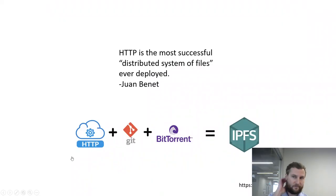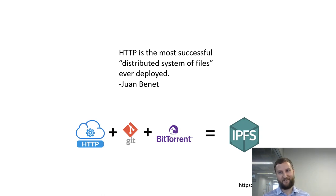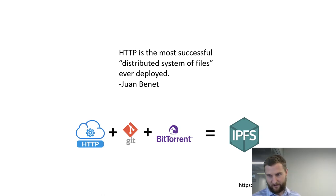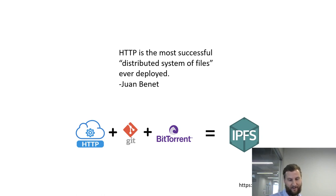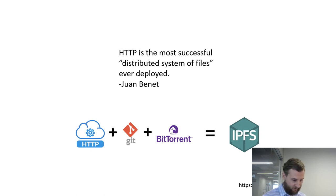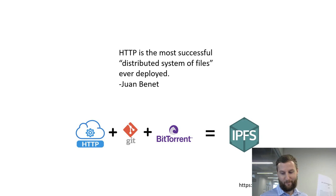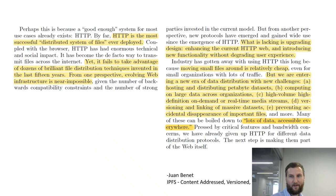If you take HTTP and add git and add BitTorrent, you get IPFS — git the version control system and BitTorrent the peer-to-peer file sharing system, all combined into IPFS. From the paper the author wrote: HTTP is the most successful distributed system ever deployed, yet it fails to take advantage of dozens of brilliant file distribution techniques invented in the last 15 years.